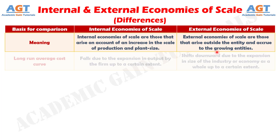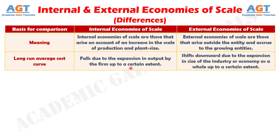Difference No. 2: In internal economies of scale, the long-run average cost curve falls due to the expansion in the level of production or plant size up to a particular level. As against this, the long-run average cost curve shifts downward due to the expansion in the size of the industry or economy as a whole up to a particular extent.